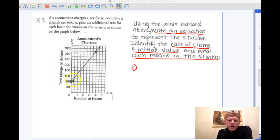According to our graph, the accountant's minimum charge is going to be $80. Even if they only spend zero hours on it, you're going to spend $80. So we know that's going to be the initial cost.